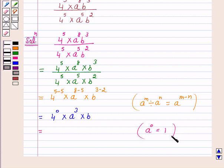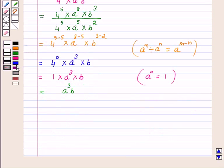So by using this law of exponents, we have this is equal to 1 times a cubed times b, and this is equal to a cubed b. Hence the answer for the above question is a cubed b.